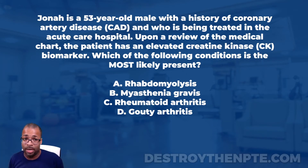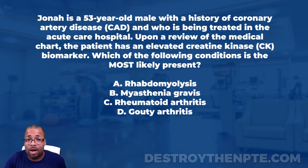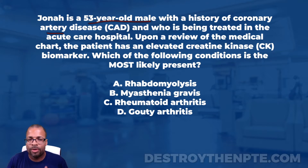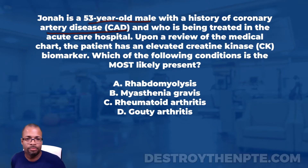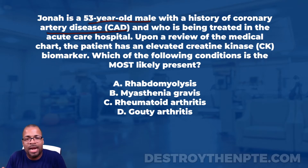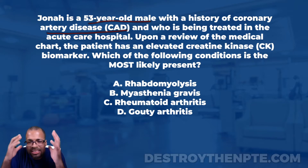Jonah is a 53-year-old male. I always look at the age group — it helps sometimes when you're trying to figure out the diagnosis. He has a history of coronary artery disease. The coronary arteries supply the heart with blood flow, and most times CAD is due to atherosclerosis — the buildup of plaque inside those arteries — reducing blood flow to the heart tissue.